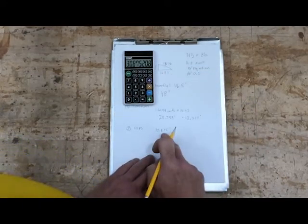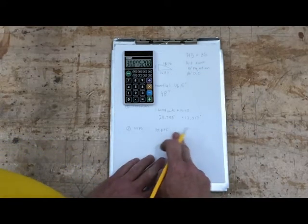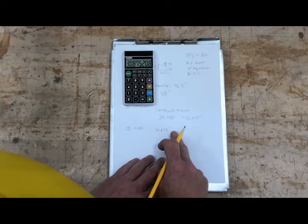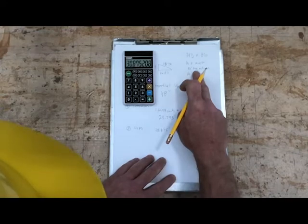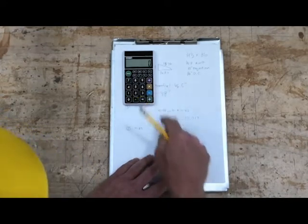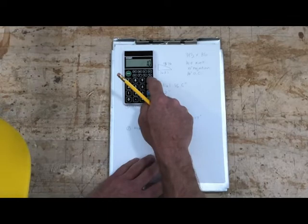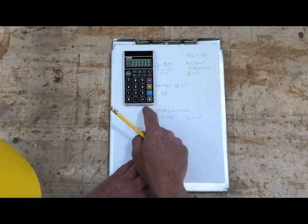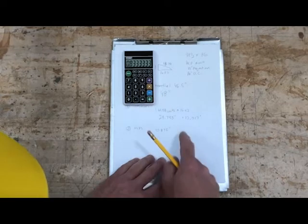Now I'm going to need to know how long is this thing going to be? How long is my tail on this thing or my overhang? I have to do the same thing. I have a 10 inch projection. So I will take 10 divided by 12 because that projection is square to the building line. It's not on the run of the hip or valley.